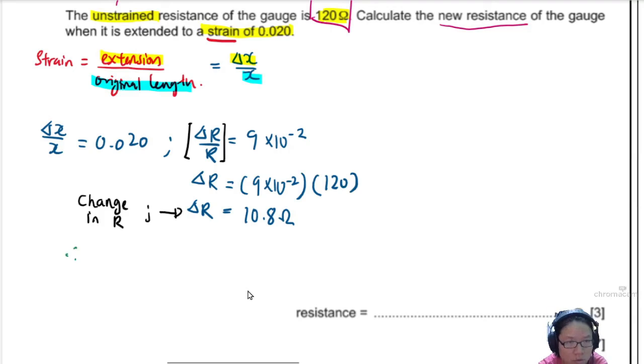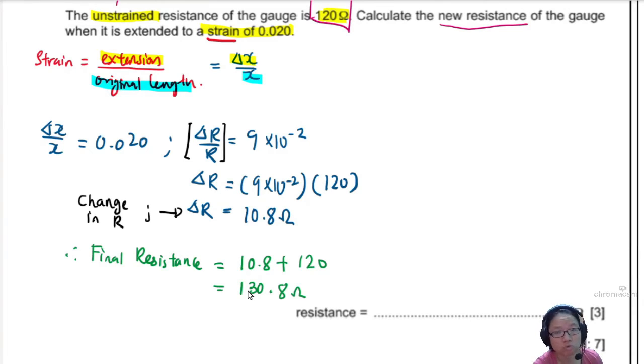So hence, final resistance will be equal to 10.8 plus the initial resistance of 120. So this will give you a grand total of 130.8. You can put 131. You can put 3SF. So I'll stick to 130 because the answer is given to 2SF here. But make sure you show your final form first. Then only you'll round to the nearest SF.